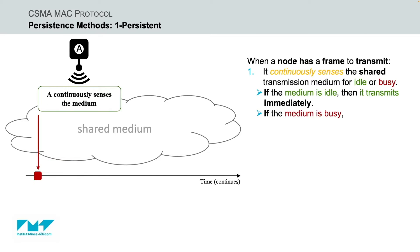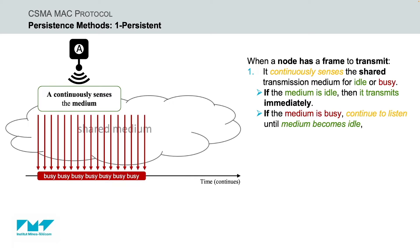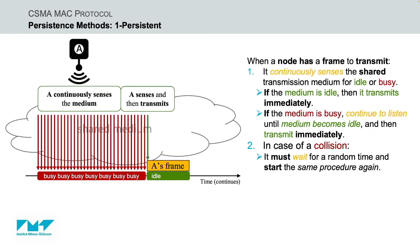However, if the shared transmission medium is busy, the node will continue sensing the shared medium until it becomes idle. Once the shared medium is idle, the node transmits its frame immediately with probability 1. In fact, due to probability 1, it is called one-persistent CSMA. In case of a collision, the transmitter must wait for a random amount of time and start the same procedure all over again.